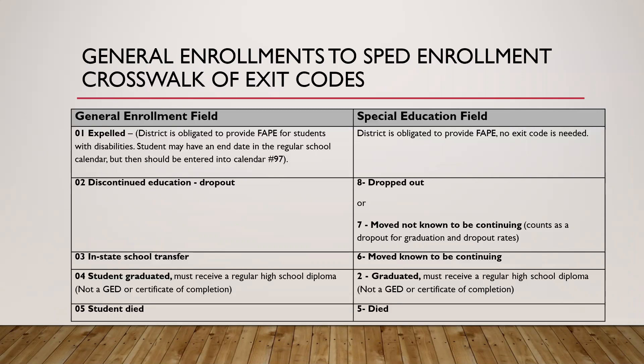Now we'll talk about the crosswalk document, also found in the desk guide from data management. It shows the general enrollment field and the special ed field — the numbers aren't always the same, but it shows how they work together. General enrollment code 01 (district expels someone) — the district is still obligated to provide FAPE; the student may have an end date in the regular calendar but should be entered into school 97. In the special ed field you won't put anything because the district is still required to provide FAPE. Code 02 (discontinued education/dropped out) corresponds to special ed code 8 (dropout) or code 7 (moved not known to continue).